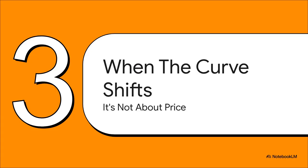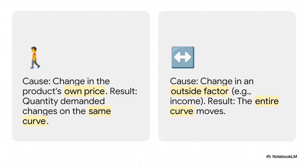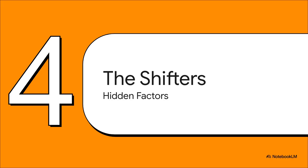But what happens when something else changes — something that isn't the price? Like what if you get a big raise at work, or a new fashion trend makes something super popular all of a sudden? This is where it gets really fascinating, because the entire curve itself can actually move. A movement along the curve is just you dancing with the price tag — price goes up, you step back; price goes down, you step forward. But a shift of the entire curve is a whole different story. That means it's a fundamental change in how much you want that product, no matter what the price tag says. Economists call these outside factors shifters.